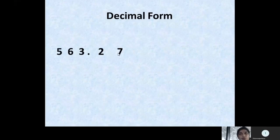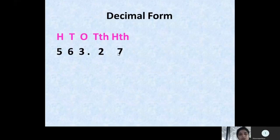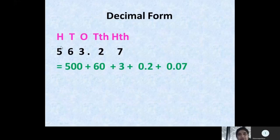Now let us write the given number 563.27 in decimal expanded form. Again we write the places of each digit on top. Then we write the expanded form as: 500 + 60 + 3 + 0.2 + 0.07.